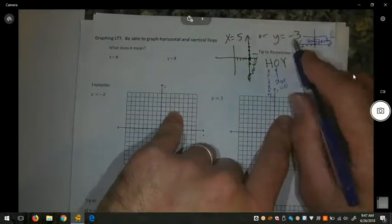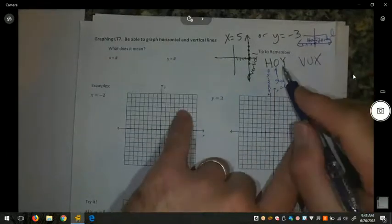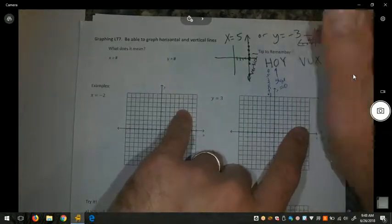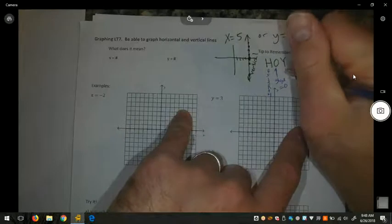You're not going up or down, you have a slope of 0. And it is a y equals equation, in this case, y equals negative 3. So, this is y equals a number.